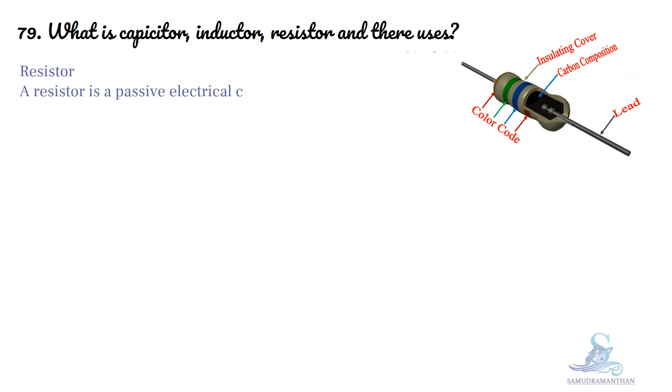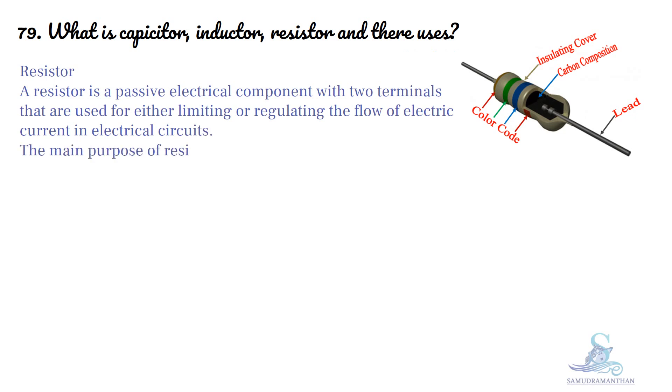Resistor: A resistor is a passive electrical component with two terminals that are used for either limiting or regulating the flow of electric current in electrical circuits. The main purpose of resistor is to reduce the current flow and to lower the voltage in any particular portion of the circuit.